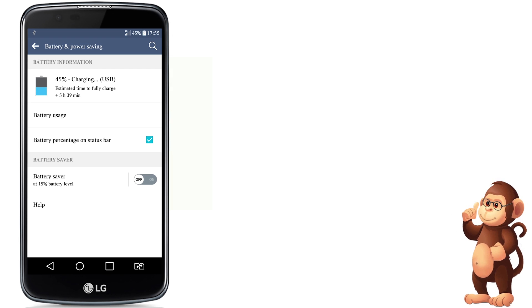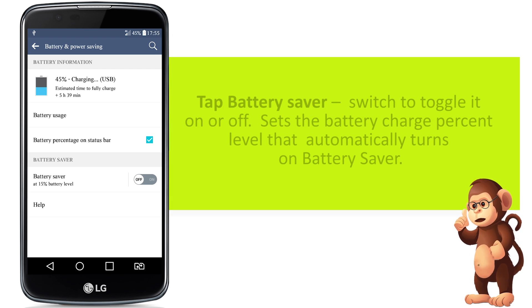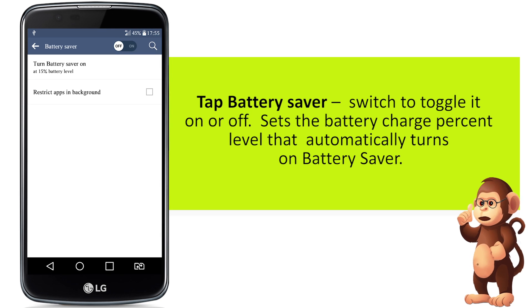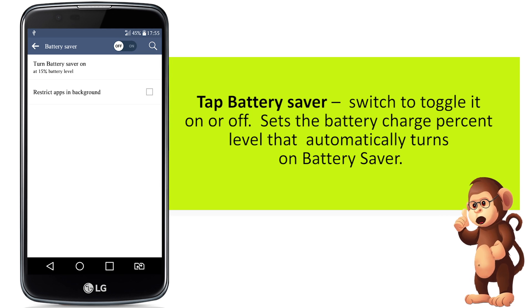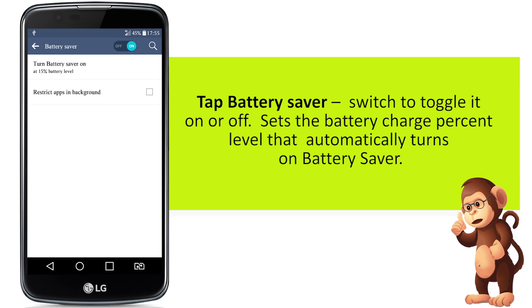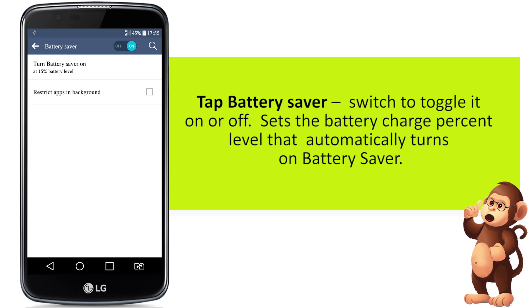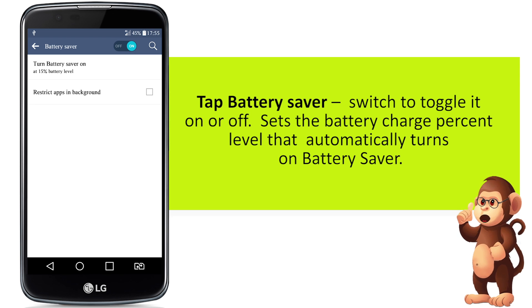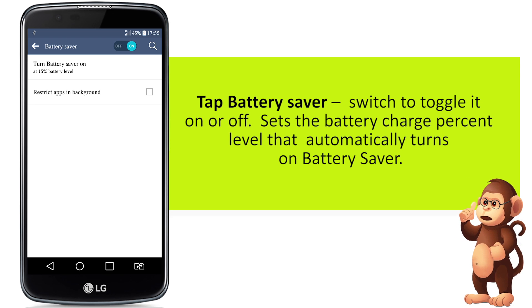Tap battery saver. Use the switch to toggle it on or off. This sets the battery charge percent level that automatically turns on battery saver.